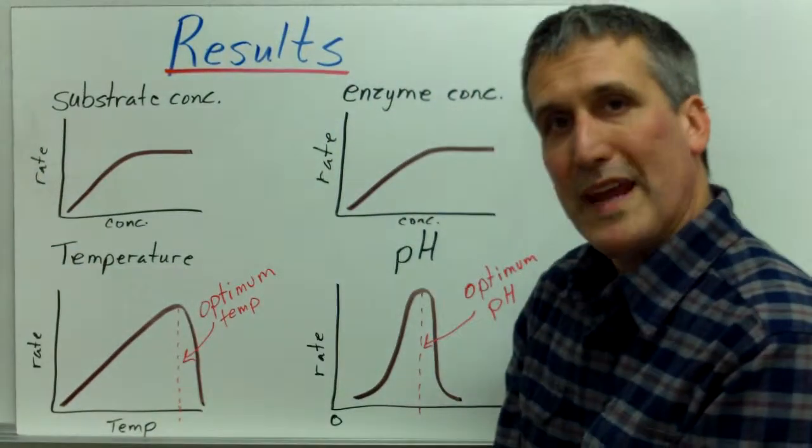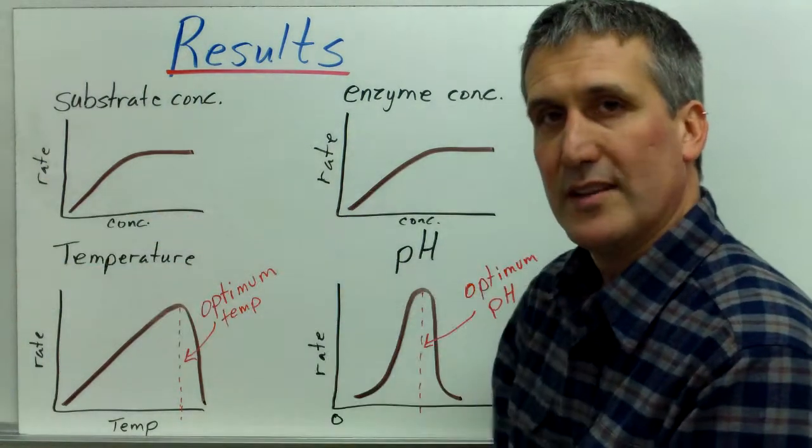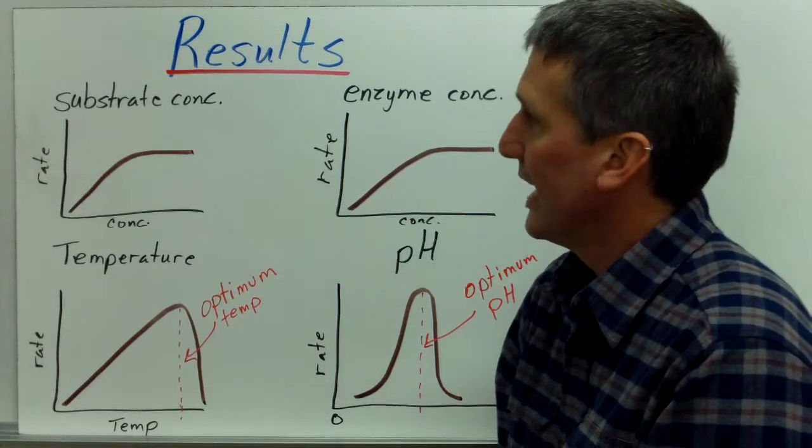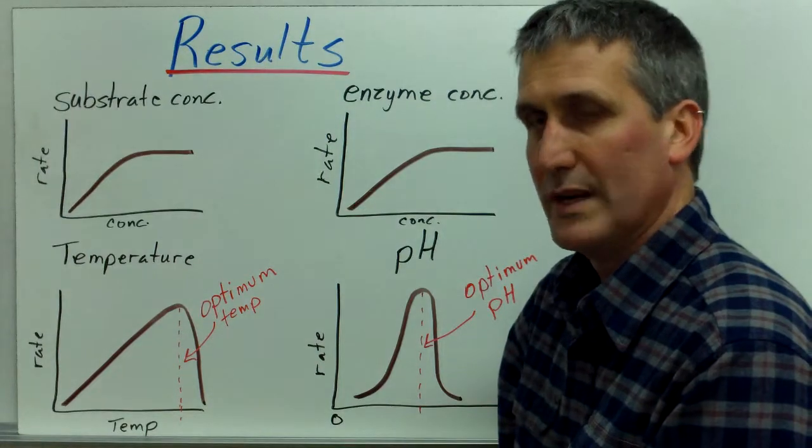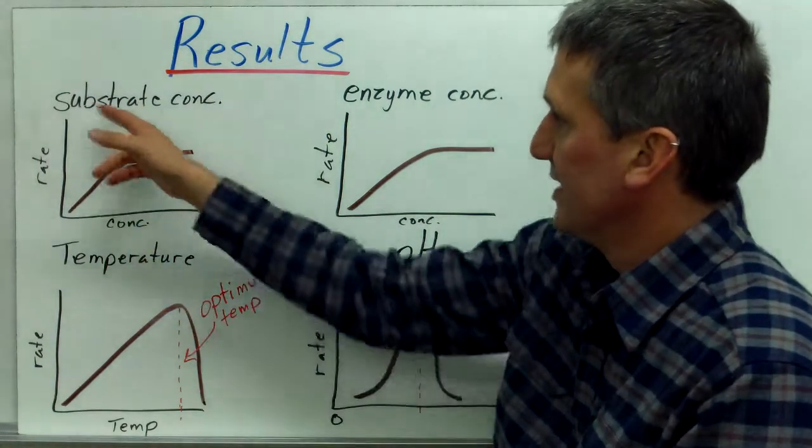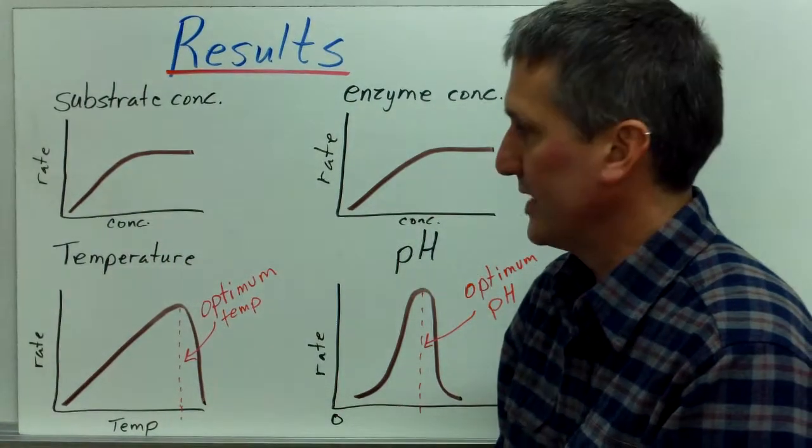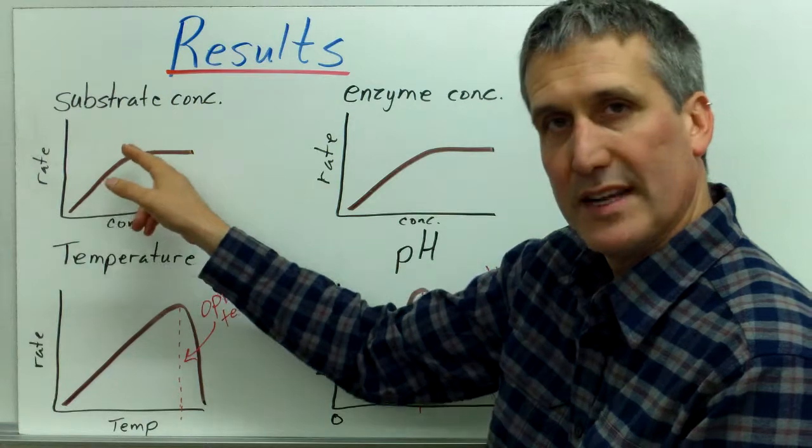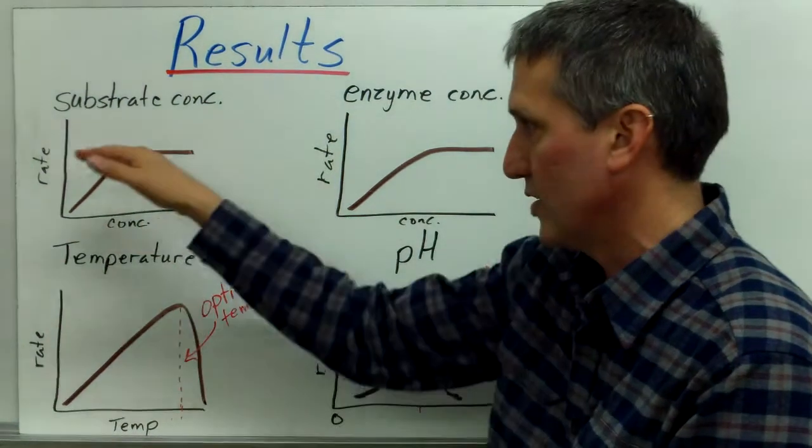We are basically trying to get similar results to this. After you make those multi-line graphs, you can actually make a summary graph. This is basically what we are trying to reproduce. This is substrate concentration. As the concentration increases, the substrate concentration increases, the reaction rate will increase and then get to a certain point where adding more substrate is not going to increase it, so it levels off.